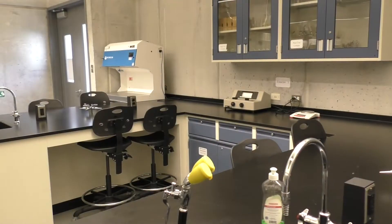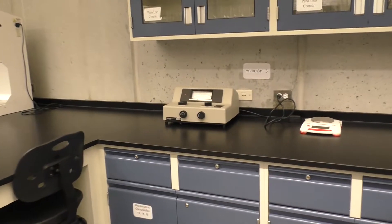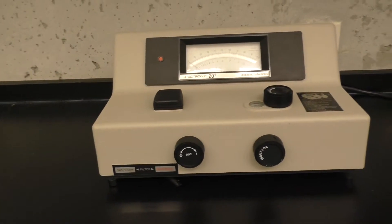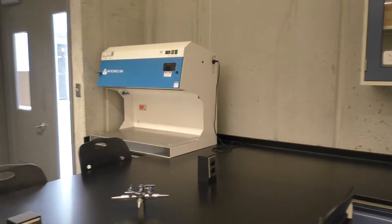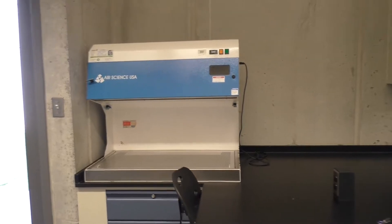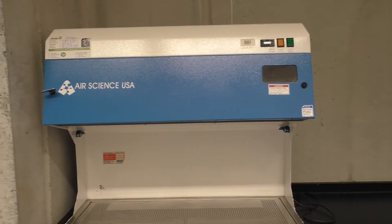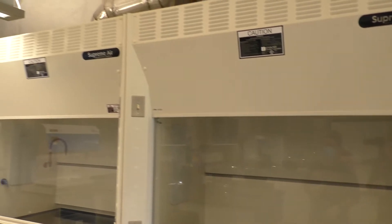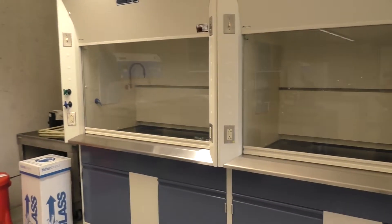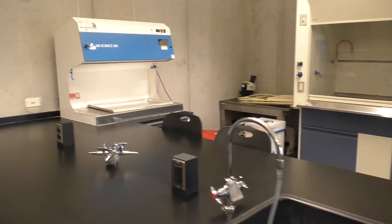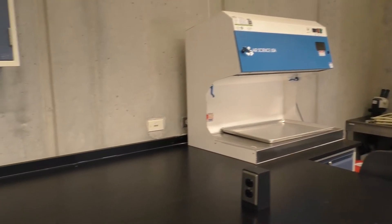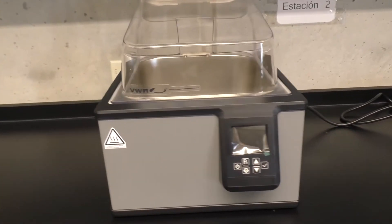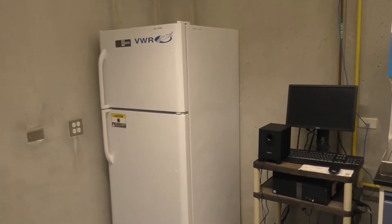The general lab equipment includes a spectrophotometer, four ductless fume hoods, two conventional fume hoods, digital hot plates, and a water bath. And of course, we also have a refrigerator.